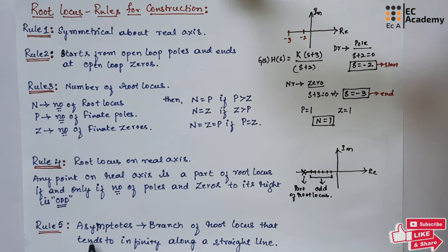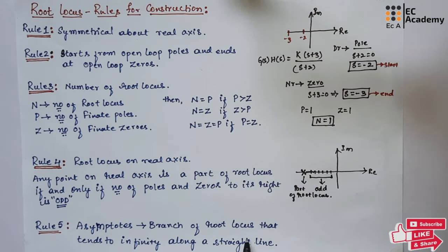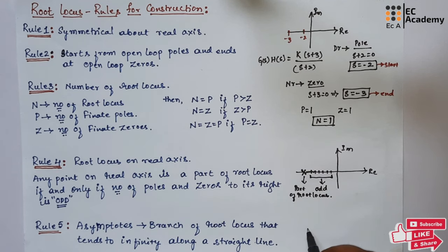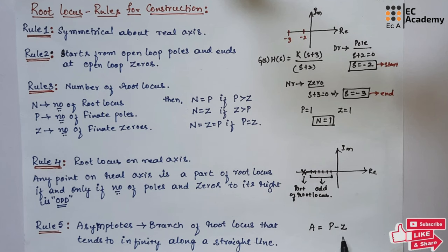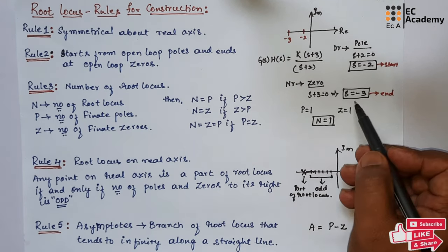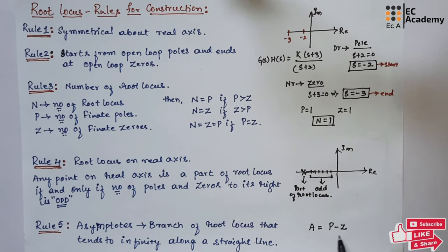Rule 5 is about asymptotes. Asymptotes are the branches of root locus that tend to infinity along a straight line. The total number of asymptotes is equal to pole minus zeros. In this example, pole is 1 and zero is 1, so 1 minus 1 gives 0 asymptotes.